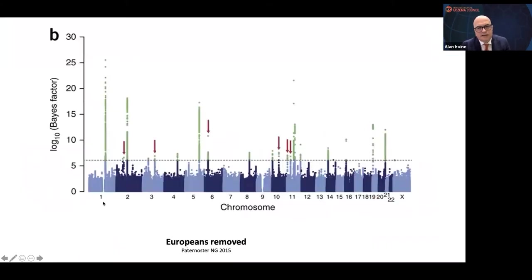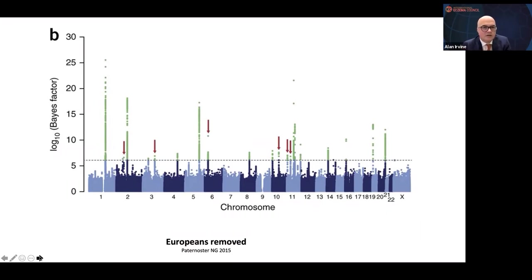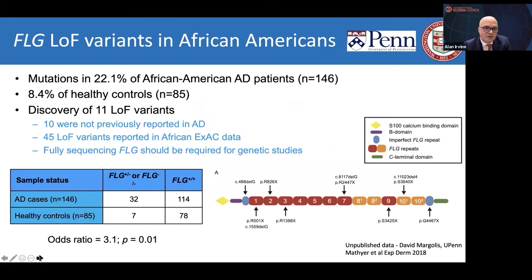Looking at big aggregate GWAS studies — this is a Manhattan plot from genome-wide association studies with all Europeans removed, so a rest-of-the-world ethnicity mix — we see on chromosome 1Q21 the filaggrin locus is the most overrepresented locus in atopic derm. There's another locus on chromosome 11 which is the second commonest hit. Filaggrin is common in all populations with the exception of African-Americans and Africans, where it's not as common, but where it does exist, the odds ratios are about 3x.